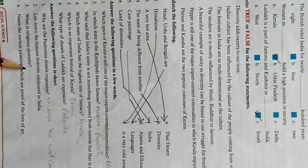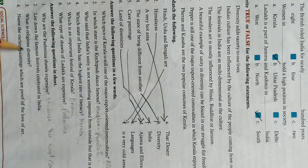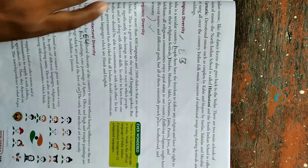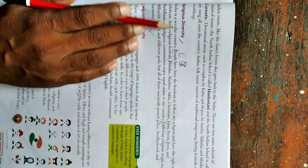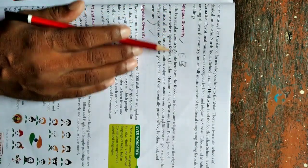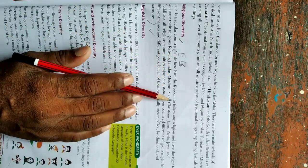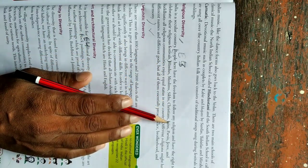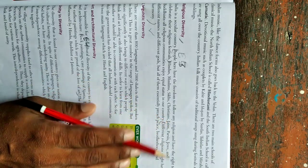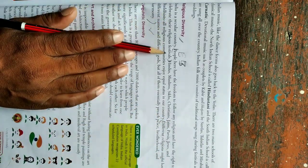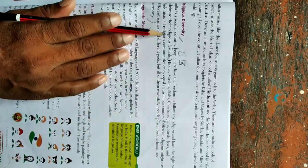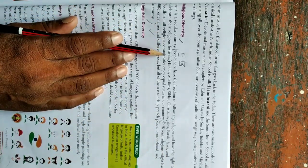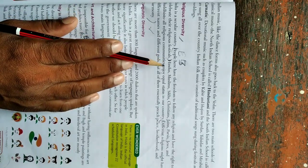Third question, what is religious diversity? Jo dharmik vividhta hai, usse aap kya samajhte hai? Religious diversity kya hai? India is a secular country. People here have the freedom to follow any religion. Bharat mein rehne wali sabhi vyaktiyon ko azadi hai ki woh kisi dharm ko bhi follow kar sakti hai, kisi dharm ko bhi apna sakti hai. And have the right to celebrate the religious festivals. Apne religious festivals ko bhi celebrate mana sakti hai. Ise religious diversity kehte hai.